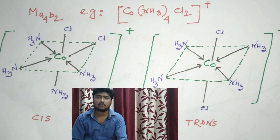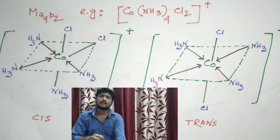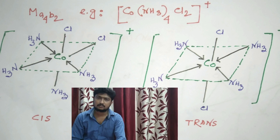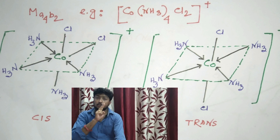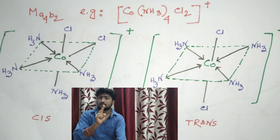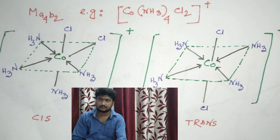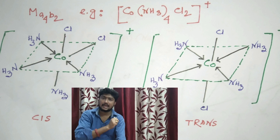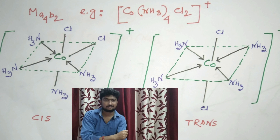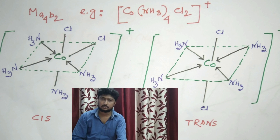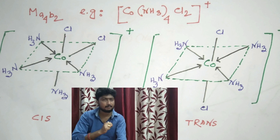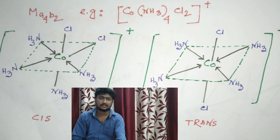In this example, M is connected to six ligands — four A and two B — for example, [Co(en)(X3)]4Cl2+. This is a hexa-coordinated compound. When two same ligands, here two Cl, remain at 90 degrees, it is called a cis isomer. If the two Cl atoms remain at 180 degrees, it is called a trans isomer. So two geometrical isomers are possible: one cis and one trans.